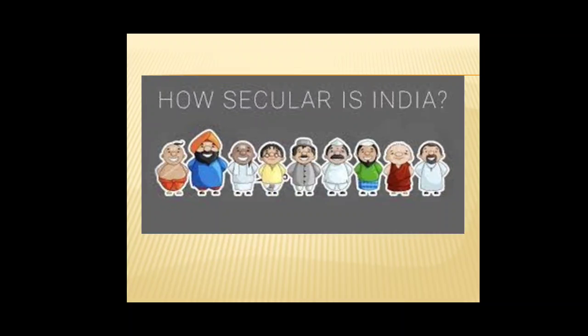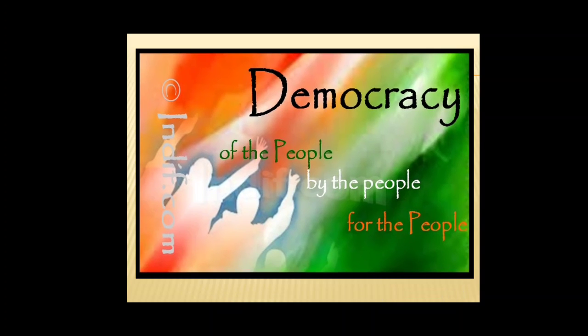The next topic is Secular State. We already know that India is a secular country, which means that in our country we treat all religions equally. Our Constitution gives every citizen the right to practice his or her own religion. The next key word is Democratic State — India is a democratic country.